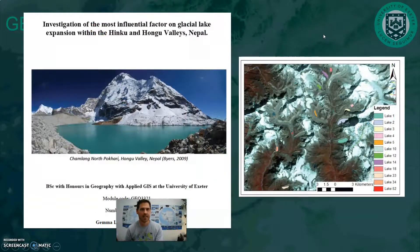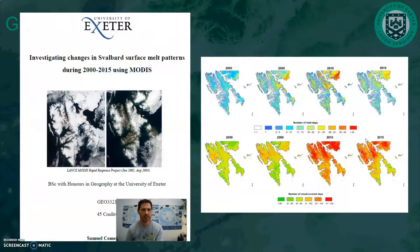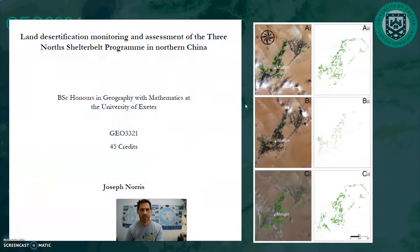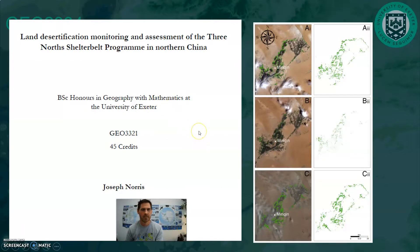Lakes in Nepal, looking at hazards, risks, glacial lake outburst flooding. Surface melt patterns across the whole of Svalbard using remote sensing data from Sam here. And Joe did a great study on desertification. So not related to snow and ice at all, but looking at similar techniques, classification, looking at changes in land use, land patterns as detected from remote sensing.